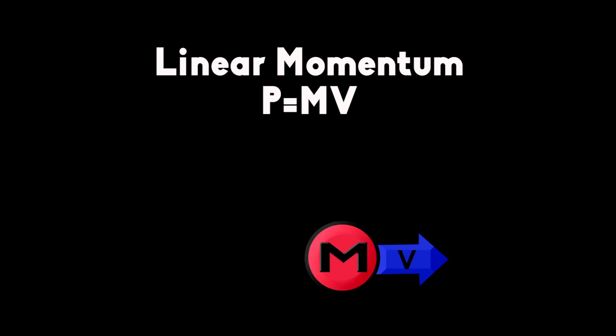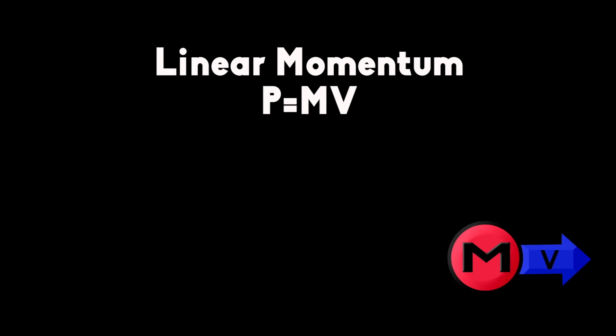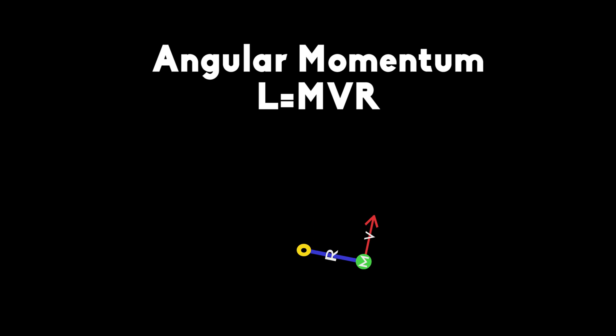The object has linear momentum p equal to m times v. Now consider an object of mass m moving on a circle with radius r with constant velocity v. The object is said to have angular momentum L equal to m times v times r.